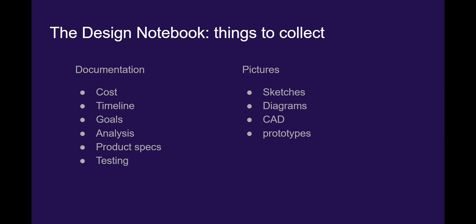So some of the things to collect: documentation would include costs, timeline, your goals, projected goals, your analyses, your product specs, and of course testing information. If you've ever written a proposal, such as a UROP proposal, you may have come across having to complete some of these things. And of course the most important thing would be to include pictures — sketches, diagrams, CAD, prototypes — just anything from the design process. You could start at the most basic thing, which would be sketches.